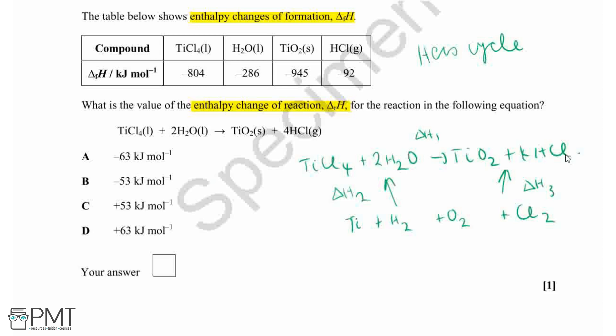With our Hess cycles, our clockwise arrows are equal to the anticlockwise arrows. And if I just slightly bend these arrows a bit...